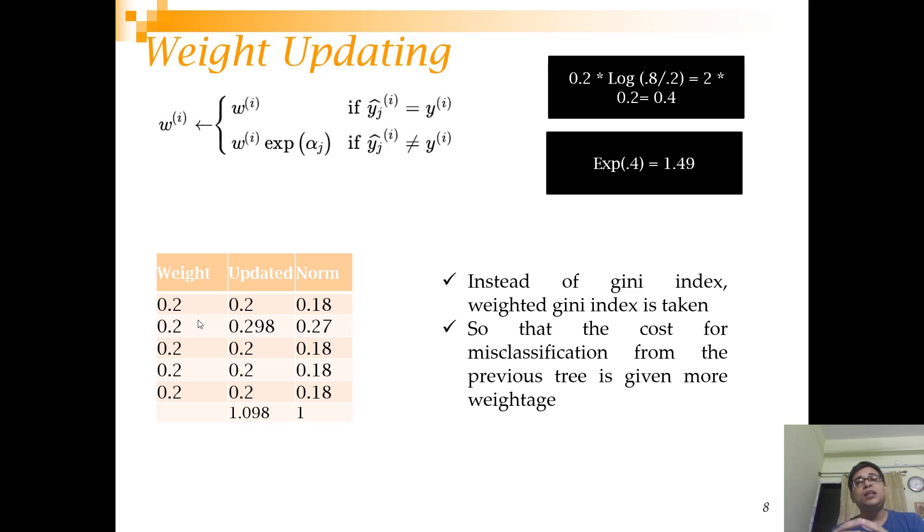If you remember that for decision trees, when making a split, Gini index can be used. Here, instead of Gini index, we use weighted Gini index. What weighted Gini index essentially does is that the misclassification which happened earlier will be given more weight. So in the Gini index probability, this weight is there. A misclassification on this and a misclassification of that will not be the same. That's how the tree is forced to not make errors on the observations that were misclassified earlier. That's the idea - that's how a decision stump corrects or builds upon the errors of the previous layer decision stump.